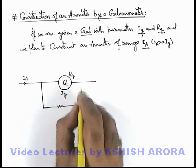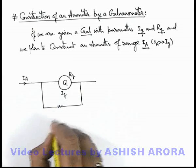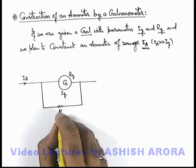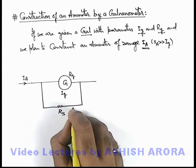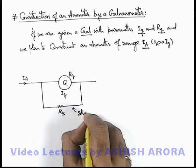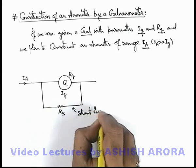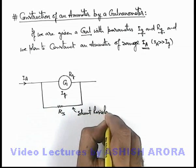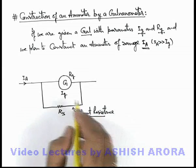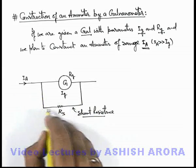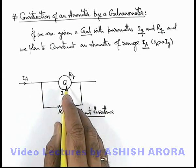So in this situation we need to connect a very low resistance in parallel combination to this galvanometer, which we call r-s, or is called the shunt resistance. This shunt resistance is used to bypass the excess current through the galvanometer.